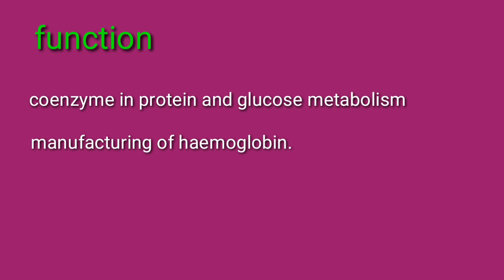Function: Vitamin B6 acts as coenzymes in protein and glucose metabolism. The main function is that it is involved in the manufacturing of hemoglobin. Vitamin B6 or pyridoxins is one of all the vitamin B which helps the central nervous system.